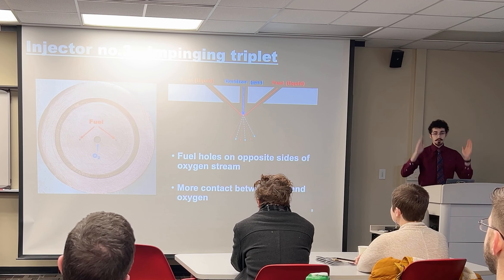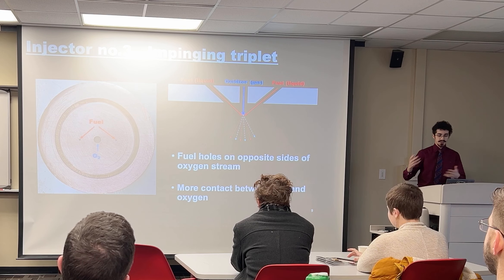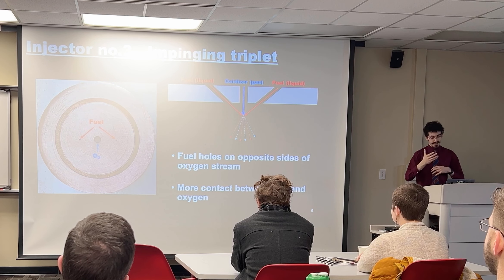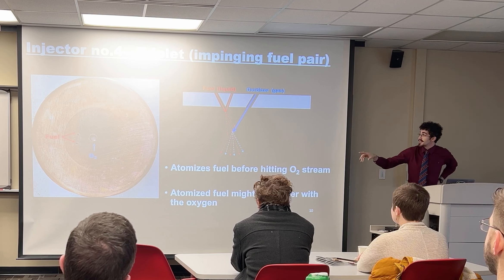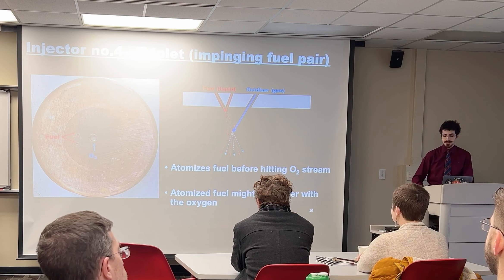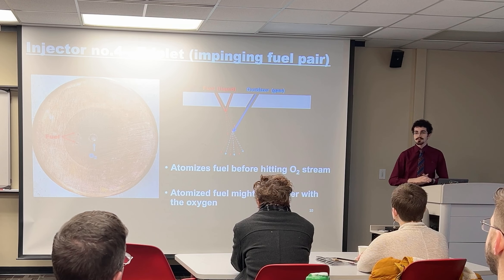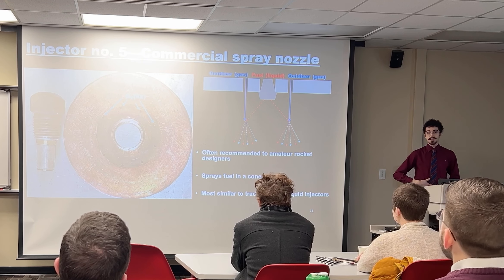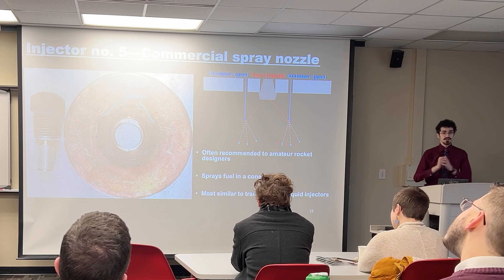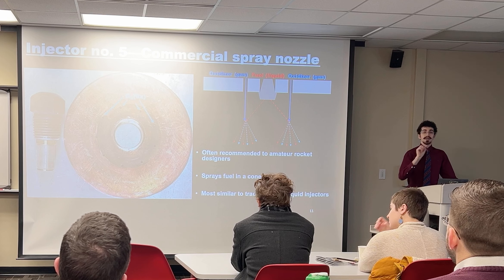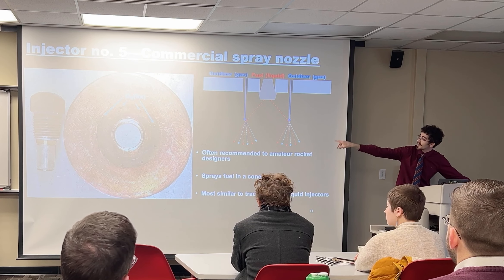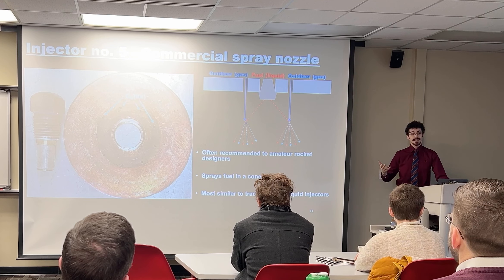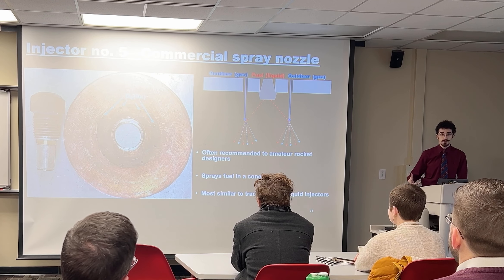Third, we have an impinging triplet: two fuel holes angled in towards the central oxygen hole. This provides more even distribution of fuel inside the combustion chamber. Fourth, we have a modified triplet, which has the two fuel holes angled towards each other so they smash together and atomize before they interact with the gas — the idea being that small fuel droplets may mix better with the gas in the combustion chamber. Lastly, it's often recommended for amateurs to use off-the-shelf components such as commercially available spray nozzles to inject liquid fuel into the rocket engine. This injects the liquid fuel as a cone, doubled with a small ring of oxygen holes around the center. In theory, this should act similarly to the coaxial tube injectors used by NASA and SpaceX, providing high performance for relatively low machining and manufacturing costs.